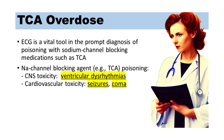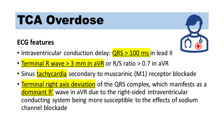ECG features of TCA overdose. ECG is a vital tool in the prompt diagnosis of poisoning with sodium channel-blocking medications such as TCA, which cause CNS and cardiovascular toxicity in overdose in the form of seizures and ventricular dysrhythmias. The most common ECG features include: 1. Intraventricular conduction delay — QRS greater than 100 milliseconds in lead 2. 2. Terminal R wave greater than 3 mm in AVR, or RS ratio greater than 0.7 in AVR. 3. Sinus tachycardia secondary to muscarinic receptor blockade. 4. Terminal right axis deviation of the QRS complex, which manifests as a dominant R' wave in AVR, due to the right-sided intraventricular conducting system being more susceptible to sodium channel blockade.